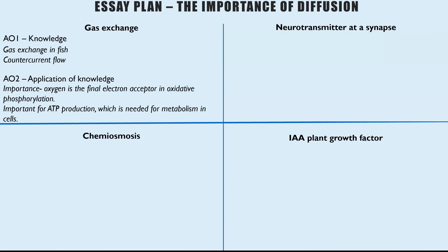You'd need to say why oxidative phosphorylation is essential: it means you get lots of ATP production, which is needed for metabolism in cells. So that would be the level of detail you would have in your paragraphs.